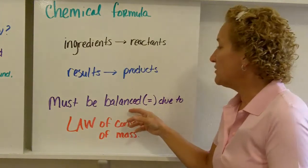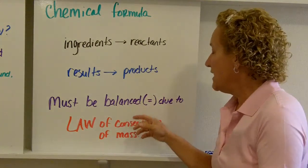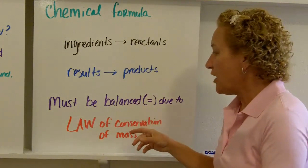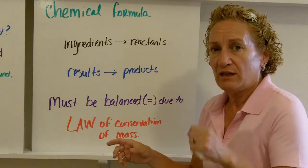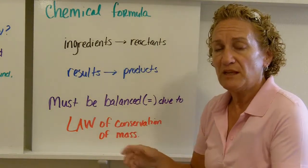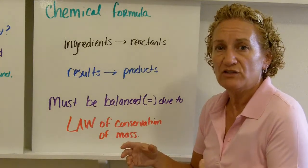So a chemical reaction must be balanced, must be equal, due to the law of conservation of mass. It says matter, it cannot be created or destroyed. It can change forms, but it can't be created or destroyed.